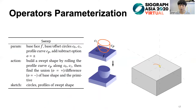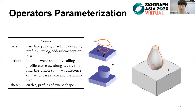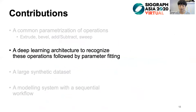To apply the sweep operator, users draw the circles and profiles of the desired swept shape. We require the base-face f, the base and offset circles c0 and c1, profile curve cp, and subtract option o. Having the operator parameterization, let's move to see the deep learning architecture to recognize these operations.